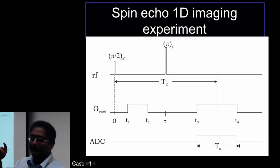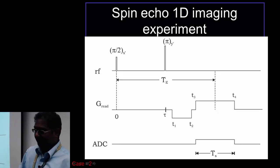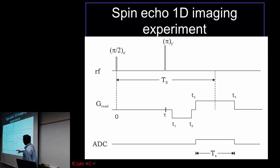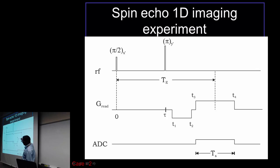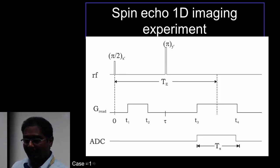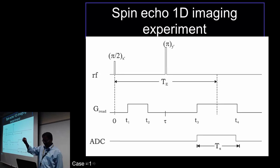The other variant: you do not have to apply that dephasing gradient on the other side. Terminology: the gradient lobe preceding the actual signal acquisition is called the dephasing gradient lobe, and the lobe corresponding to signal acquisition is called the rephasing gradient lobe. You have two options for 1D imaging using spin echo coincided with gradient echo, meaning the gradient echo timing is exactly in sync with the center of the spin echo.